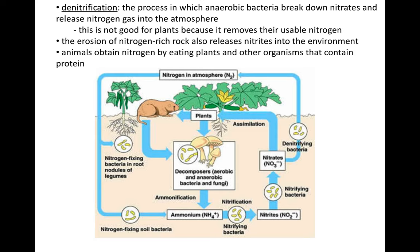Denitrification is not good for the plant. Nitrate can be assimilated by the plant, but denitrifying bacteria remove nitrates from the soil and turn them back into nitrogen gas — unusable nitrogen for the plant. This is bad for plants because if you have a lot of denitrifying bacteria in an area, that soil will not have a lot of nitrates, which means the plants will be missing one of their major nutrients. This is one of the major nutrients that recently caused the red tide and algae bloom in San Diego's waters.